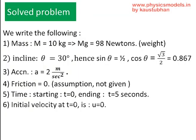First let's write down everything that's given. Mass is given as 10 kg, so weight becomes 10 into 9.8 equal to 98 newtons. Theta and acceleration are given. Friction is assumed to be zero because it's not given. The time is given and the initial velocity u equals zero because it's starting out from rest.